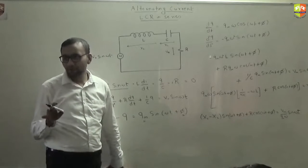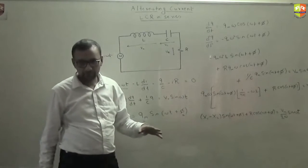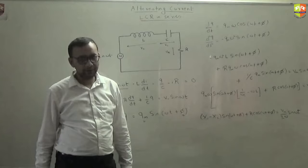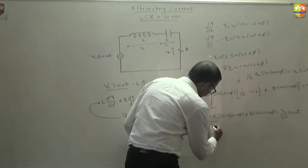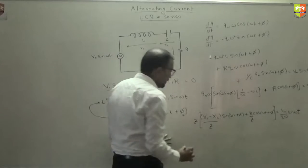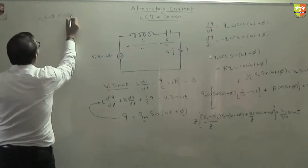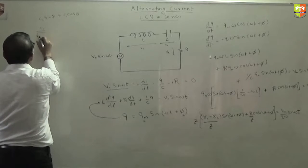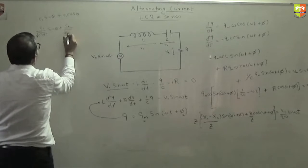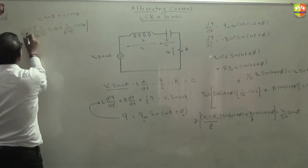You know what is Z? Impedance is root over X_C minus X_L whole square plus R square. So now what you do? You divide throughout by Z, divide and multiply by Z. There is a reason why we do that. This is a common trick. If you get c1 sin theta plus c2 cos theta, what you do? You multiply and divide by root over c1 square plus c2 square. This will let you write it as a single trigonometric function.